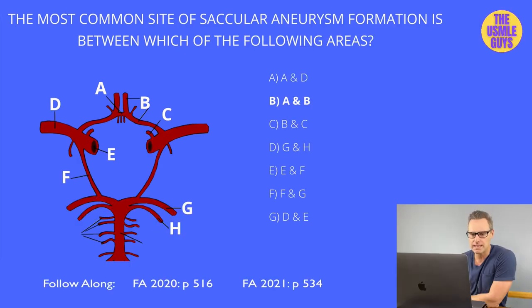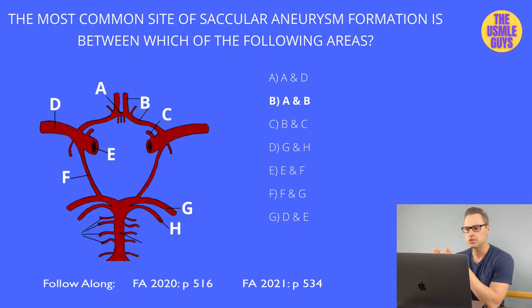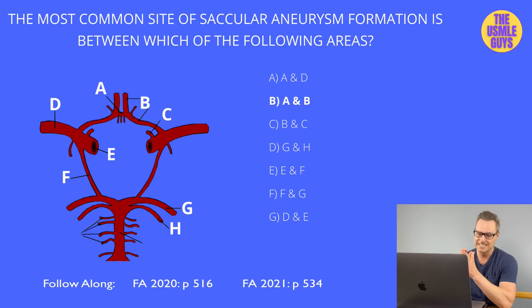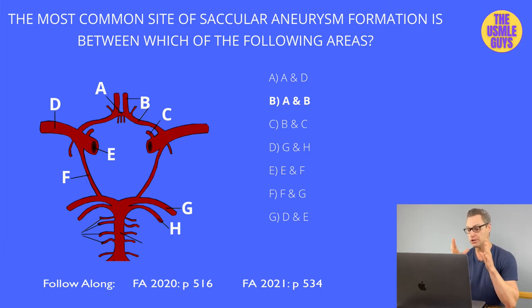The correct answer is B, between the anterior communicating artery (A) and the anterior cerebral artery (B). This may be referred to as either a saccular or berry aneurysm. This is the most common site of aneurysm formation, though not the only location. You usually don't know it's there until it ruptures, at which point we get a subarachnoid hemorrhage (SAH).